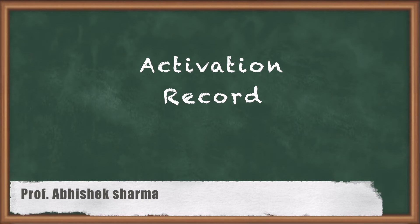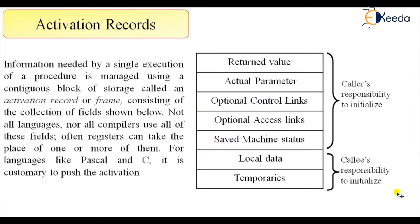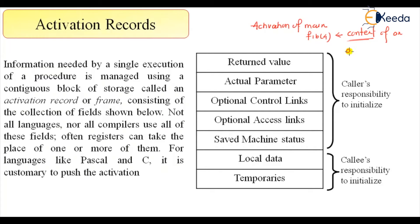Hello friends, in today's class we are going to talk about the set of records maintained during execution of a procedure, called the activation record. Welcome again. The next topic we are discussing is the activation record. We have used the term activation many times — we have seen activation of main and activation of a function.